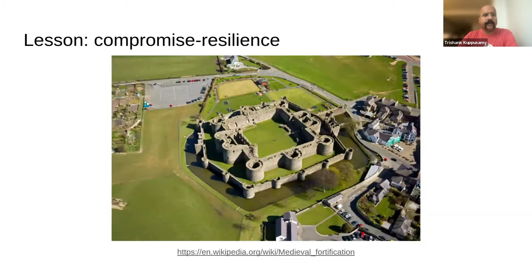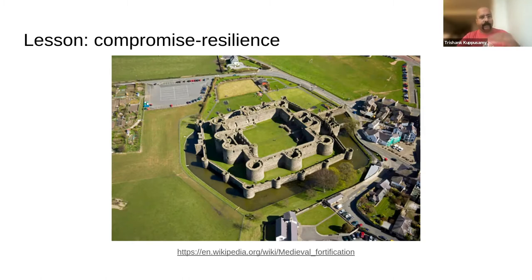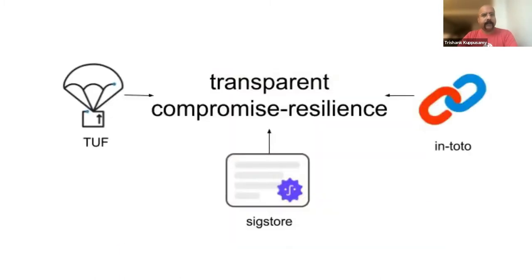What we want is compromise resilience. It's probably impossible to build an impenetrable fortress, but what you can do is build layers of defense around it — defense in depth, as some of us call it. Think of building a medieval castle with layers of moat surrounded by alligators, so attackers look at your infrastructure and say, that's not worth my time. We have this idea we call transparent compromise resilience.